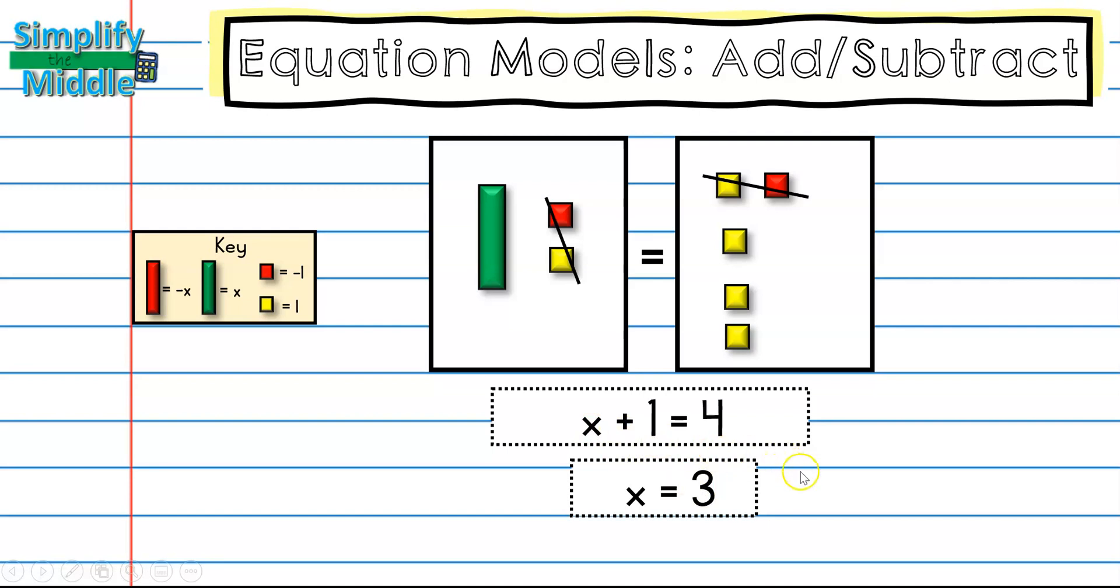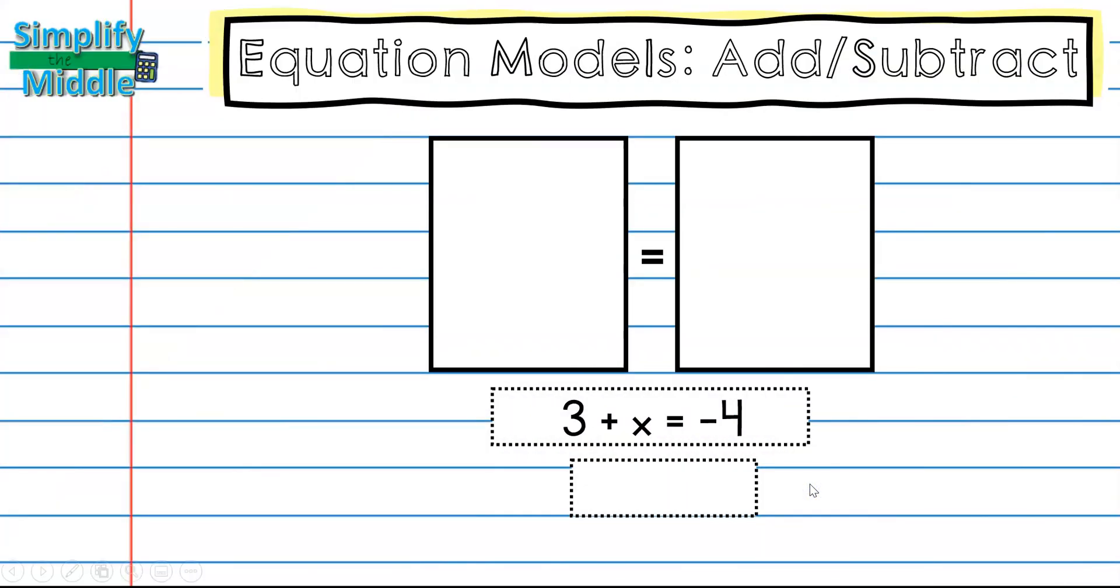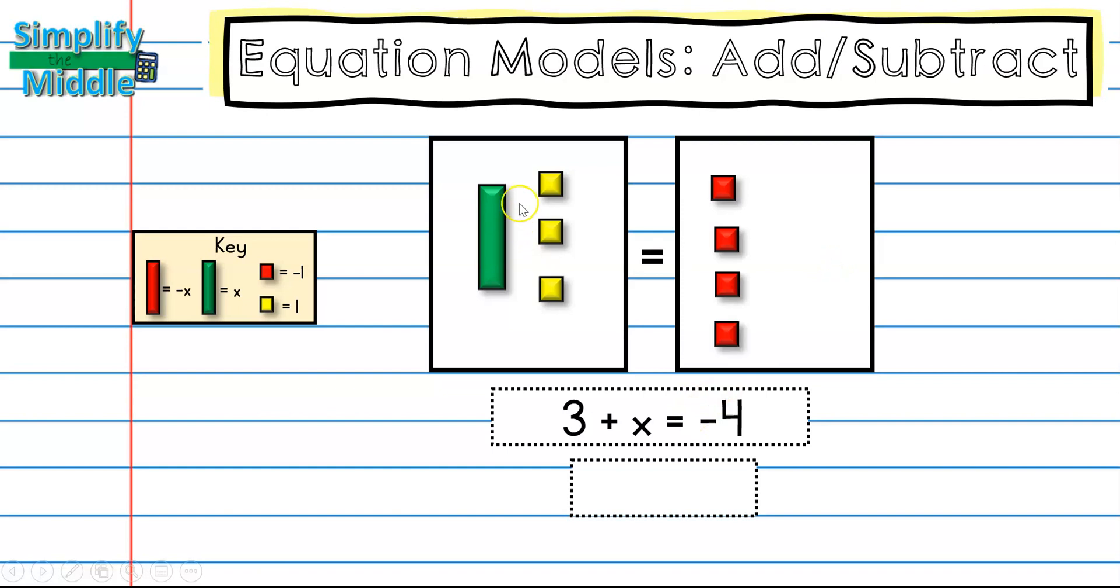On this example I have positive three: one, two, three plus x is equal to negative four: one, two, three, four. Remember I want to get x by itself here, so I'm isolating my variable by getting rid of these three positives by adding three negatives. Whatever I do to one side, I have to do to the other, and then I cross out my zero pairs. So on this problem, x equals one, two, three, four, five, six: negative seven.